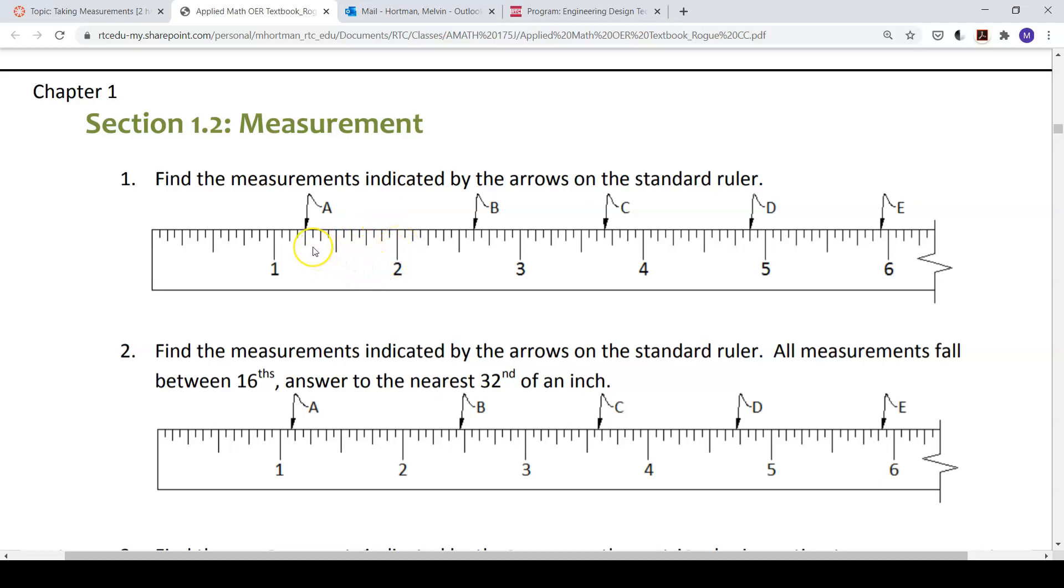Let's look at the second largest increments where this A is pointed to. First let's count how many of those increments there are. 1, 2, I'm going to include the larger one, 3, 4. So I have 1 inch, 1 and 1 fourth, 1 and a half, 1 and 3 fourths, 2 inches.